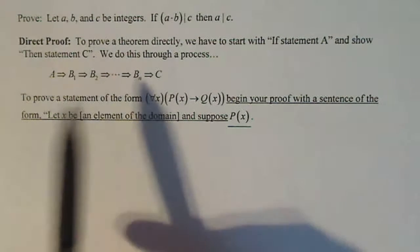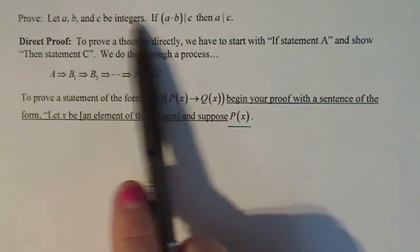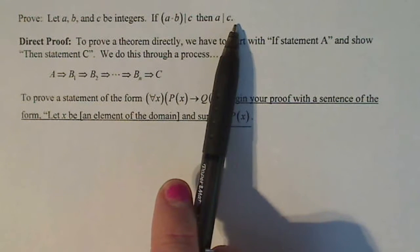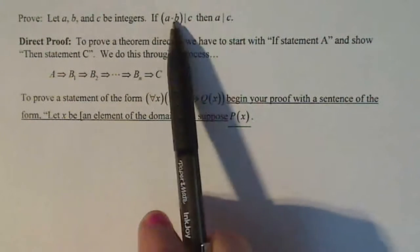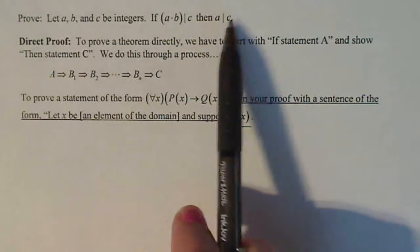So this is what we're proving here. Let a, b, and c be integers. If a times b divides c, then a divides c. We're going to do this with a direct proof because these definitions are very clear. There's nothing crazy going on here.